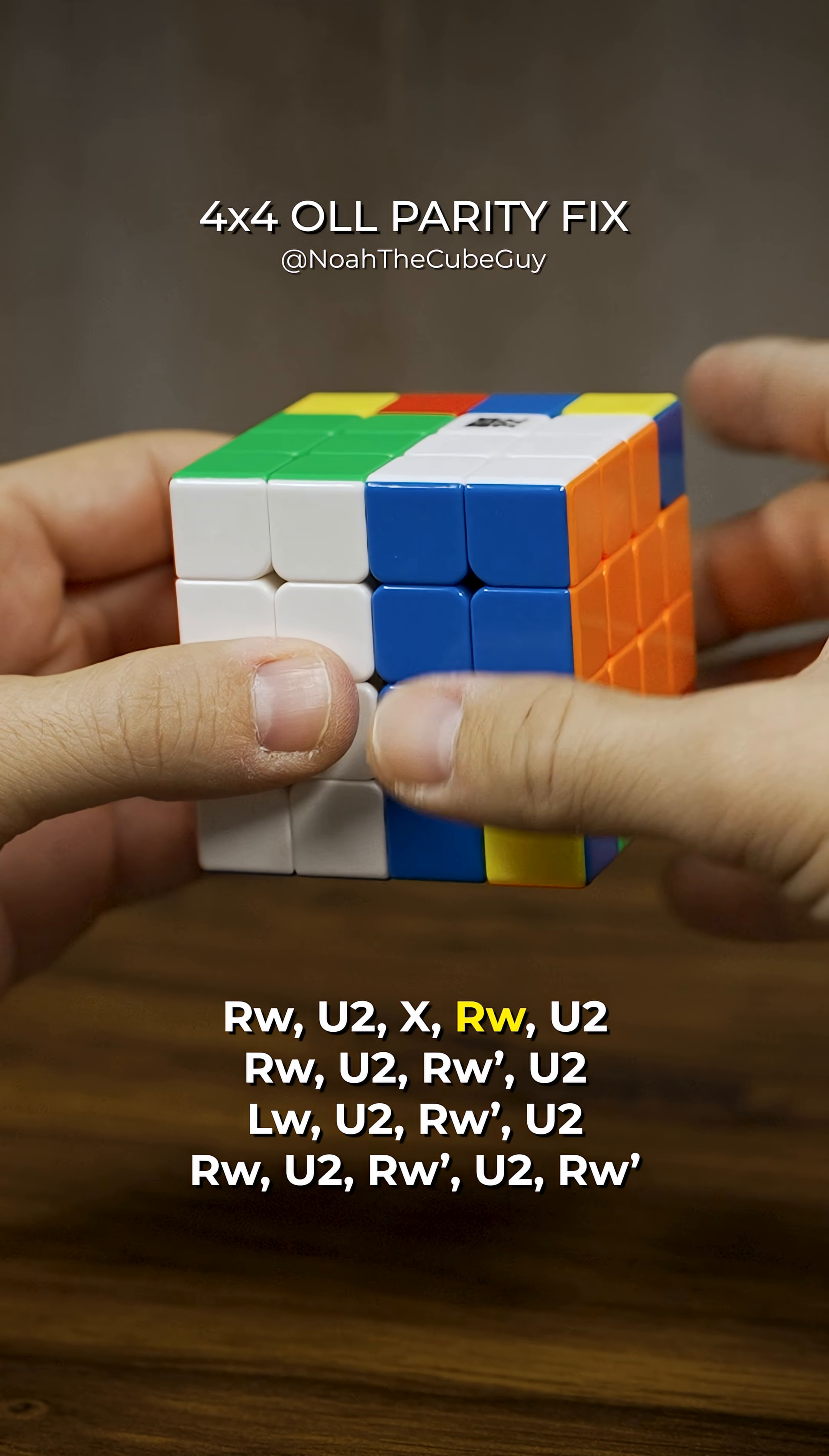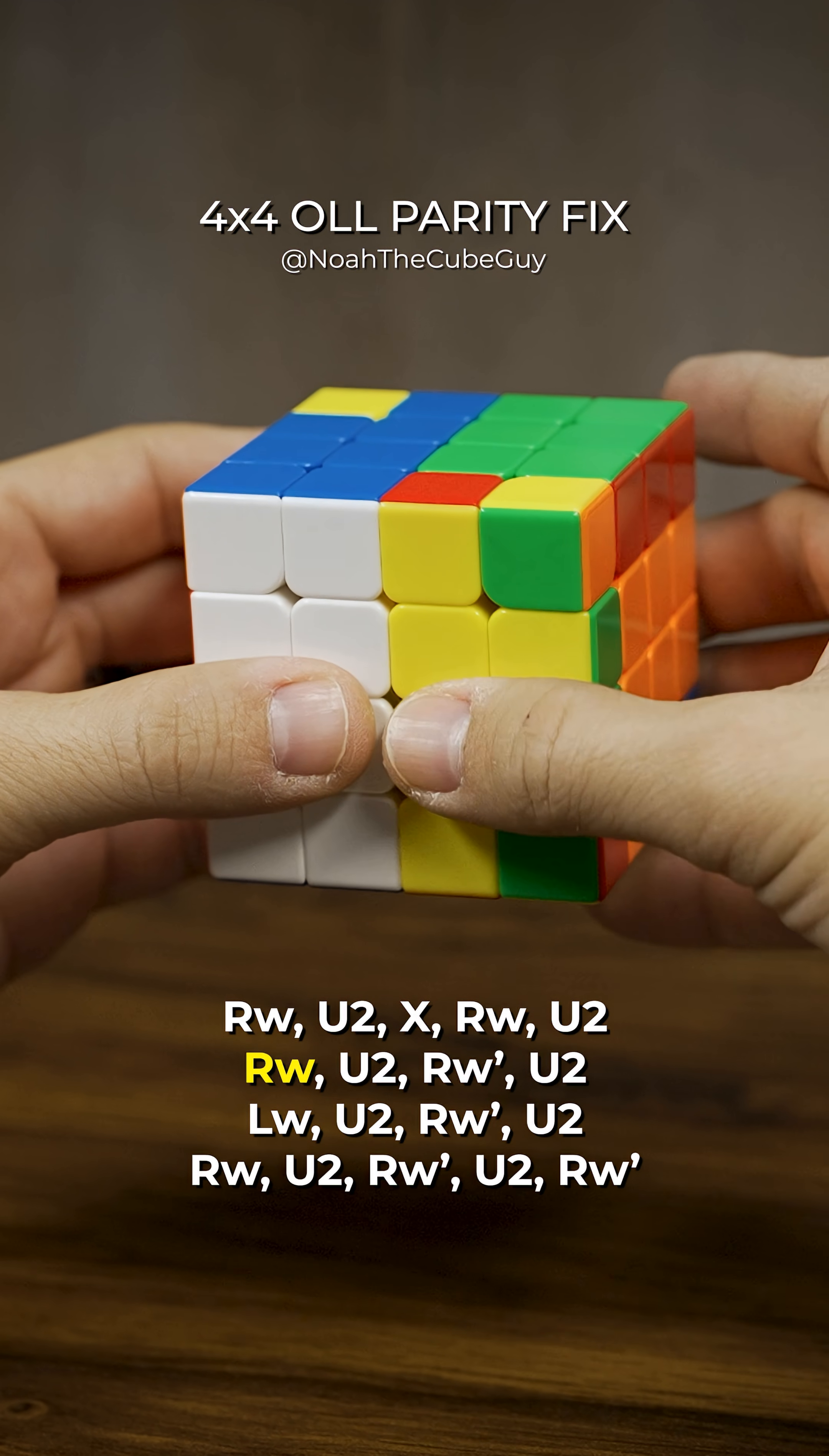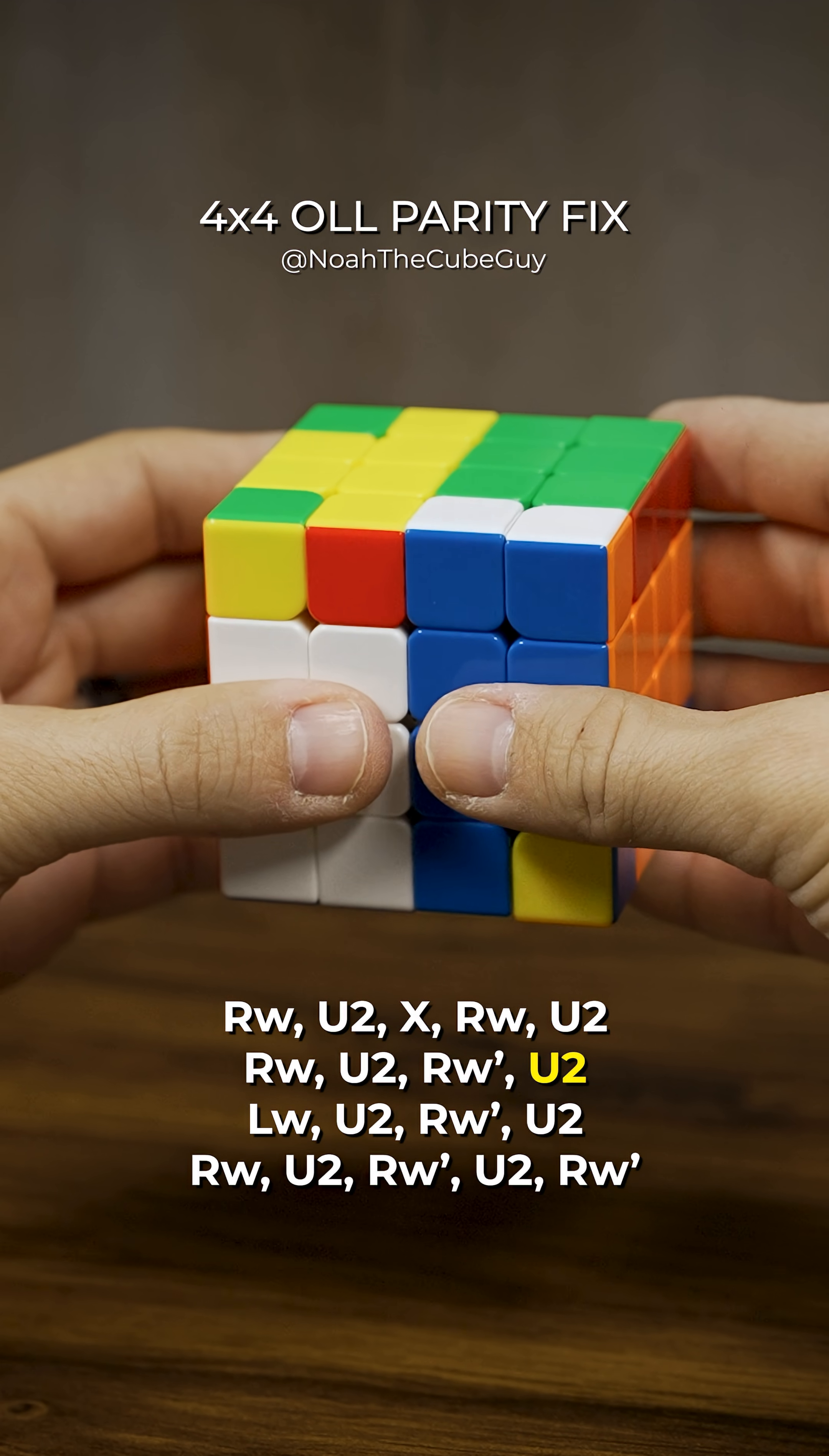The two right layers clockwise, up two times. The two right layers clockwise, up two times. Now take the two right layers and go prime, up two times.